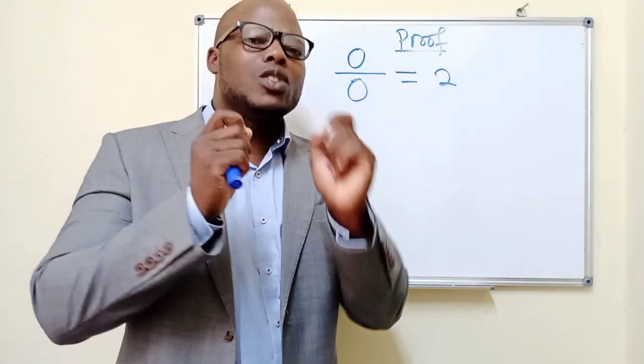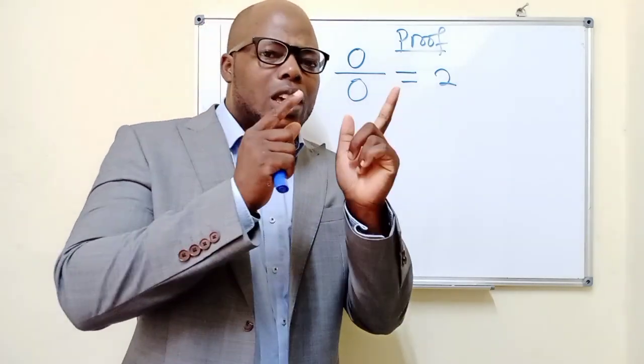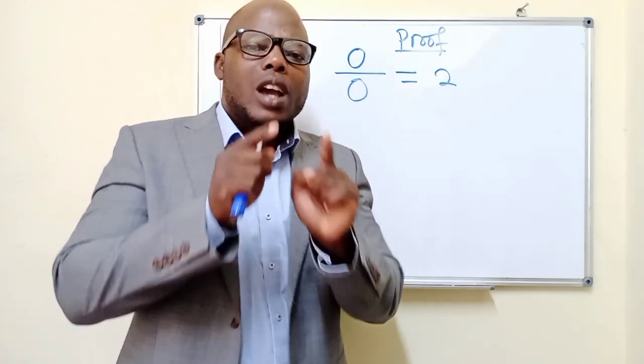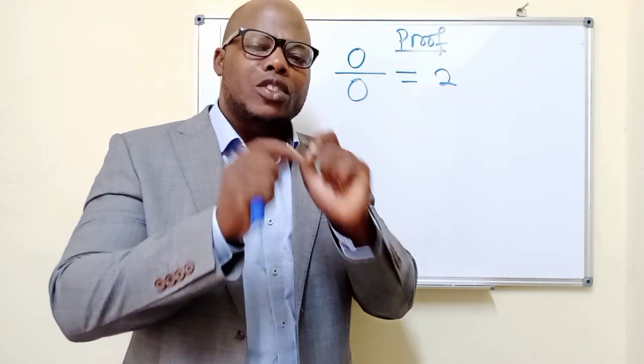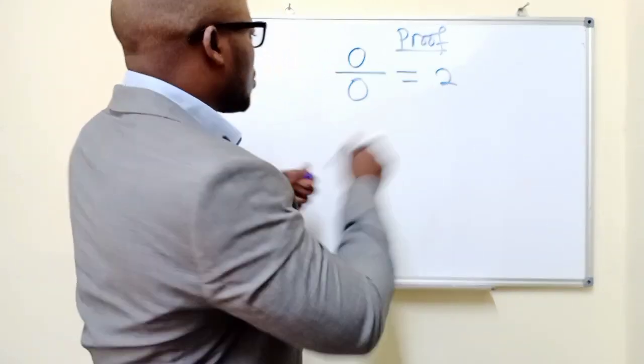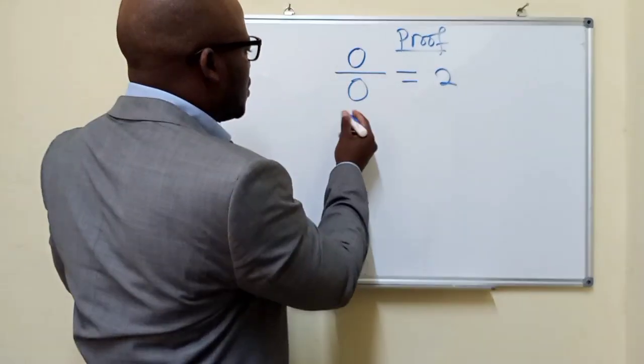This is what makes people think mathematics is difficult. You need to think outside the box. How can you show that 0 over 0 is equal to 2? So we go like this.